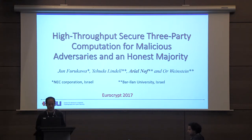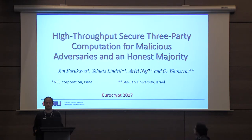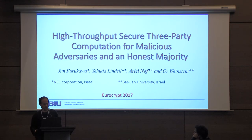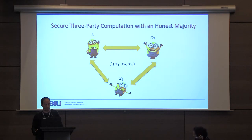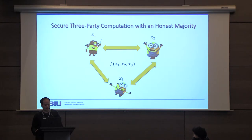In this talk I will present a protocol for the specific case of three parties that is secure against a malicious adversary who controls a minority of the parties and achieves high throughput. In our setting, we have three parties who wish to jointly compute some functionality, and since we require an honest majority, only one of the parties may be corrupted.